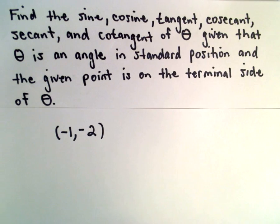Here we're going to find the sine, cosine, tangent, cosecant, secant, and cotangent of theta. Given that theta is an angle in standard position and the given point is on the terminal side of theta.